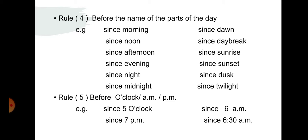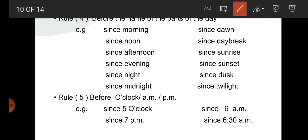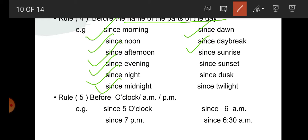Rule number 4: before the name of the part of the day. In a day there are so many parts, and the parts of the day are definite. That's why we use since before them. For example: since morning, since noon, since afternoon, since evening, since night, since midnight, since dawn, since daybreak, since sunrise, since sunset, since dusk, since twilight. These are the definite parts of the day, that's why we use since here.